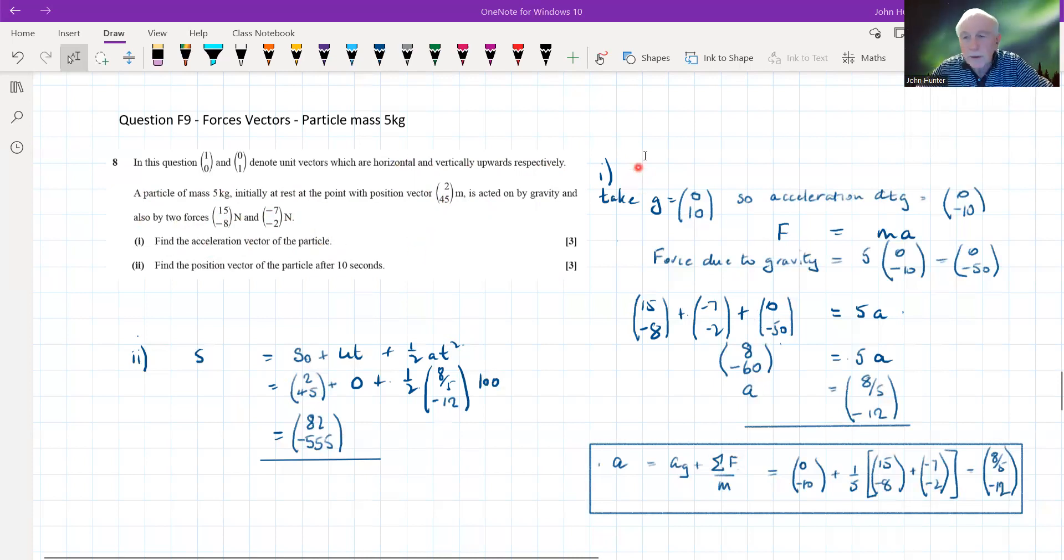So we're not told what the acceleration due to gravity is here, so we're going to take it as 10 metres per second per second. When we think about that in vector form, there is no acceleration due to gravity in the rightwards direction, but there is in the downwards direction of 10. However, our frame of reference has positive going up, so our acceleration due to gravity is going to be, as far as this question is concerned, 0 minus 10.